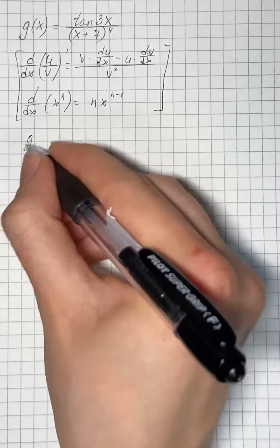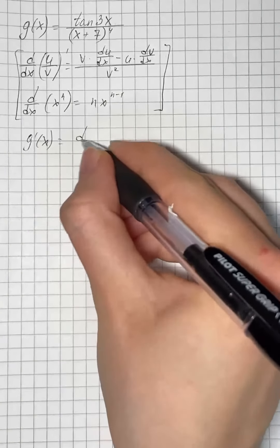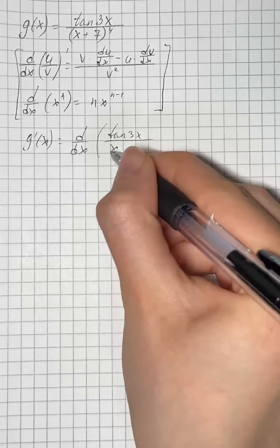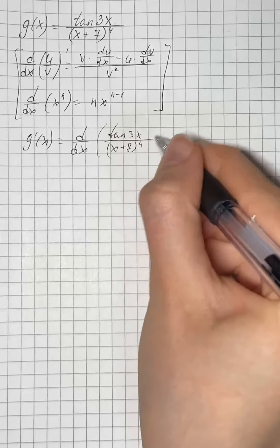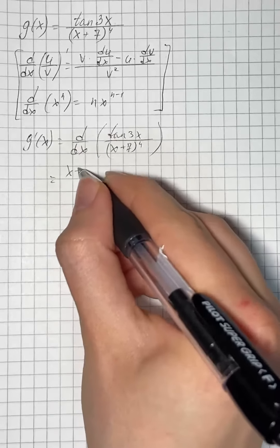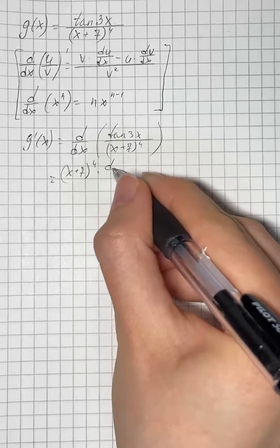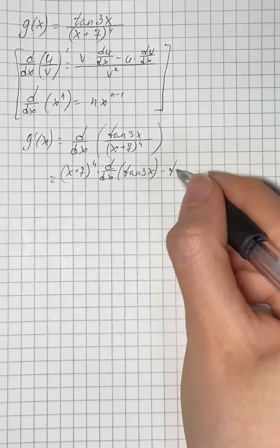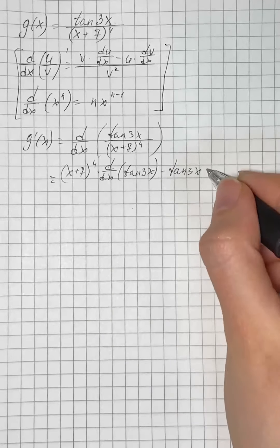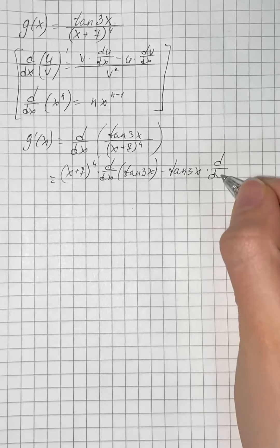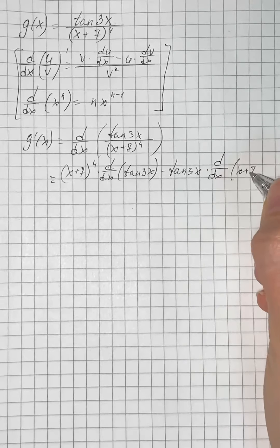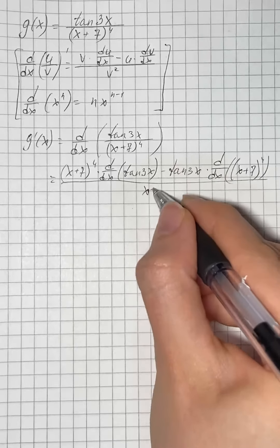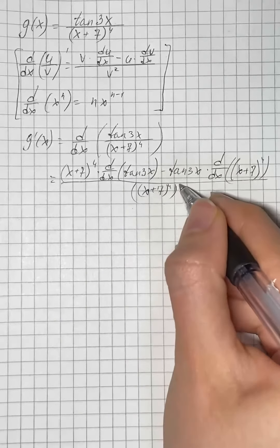So now we're going to find the derivative of our function, differentiating with respect to x. That equals x plus 7 to the fourth power times the derivative of tangent of 3x, minus tangent of 3x times the derivative of x plus 7 to the fourth power, all over x plus 7 to the fourth power squared.